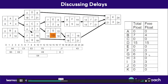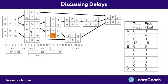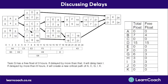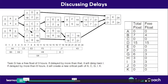Task G has a free float of three hours, meaning if delayed by more than that, it will delay other tasks beginning — specifically task I, the only task that depends on task G. For this assessment, you'll need to say what tasks will be delayed. If task G is delayed by more than six hours, task K will be delayed as well, but more importantly, the project's minimum completion time will be exceeded, creating a new critical path of A, C, G, I, K.